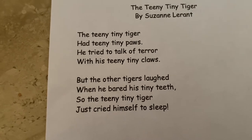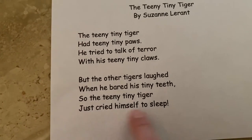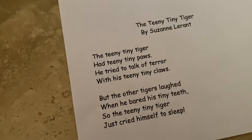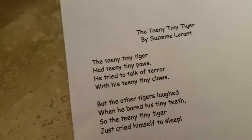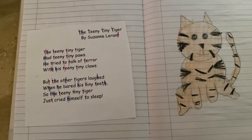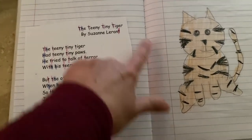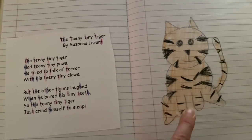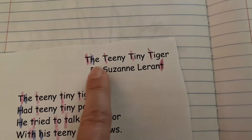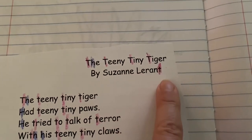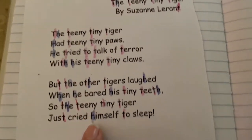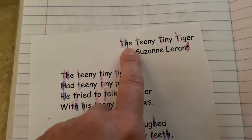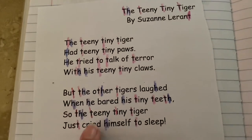You're going to cut out the poem and glue it in your poetry book, and then do a picture to illustrate. Take a look at what I've done. I cut out my poem and I glued it in. I drew a picture of that teeny tiny tiger. And then I did some rainbow writing — I found all the T's. Lots of T's! And then I decided to do another letter. I chose H, and I found all the H's.